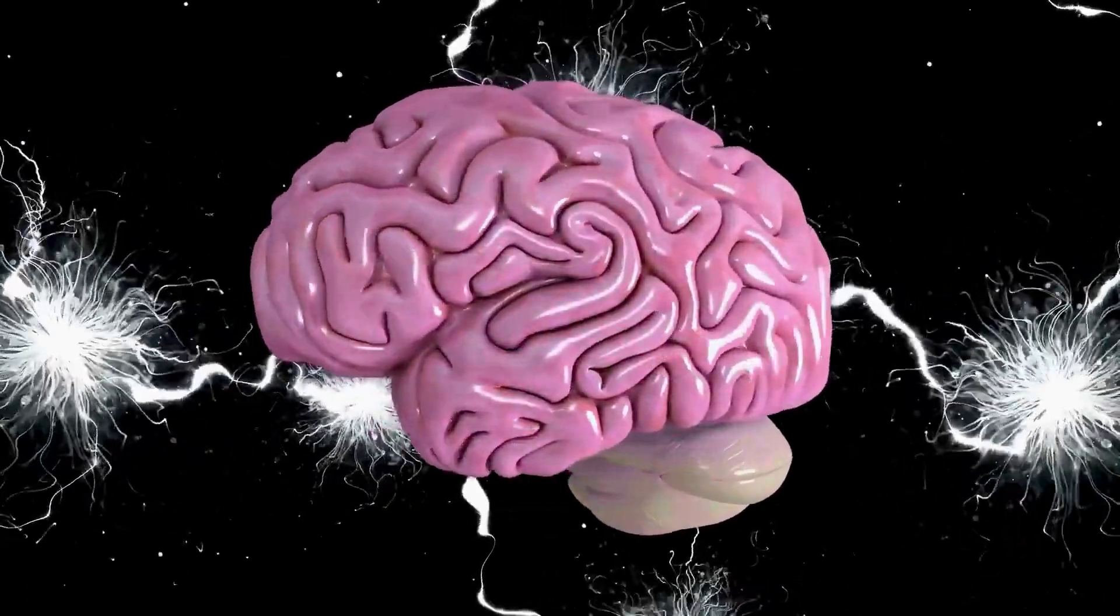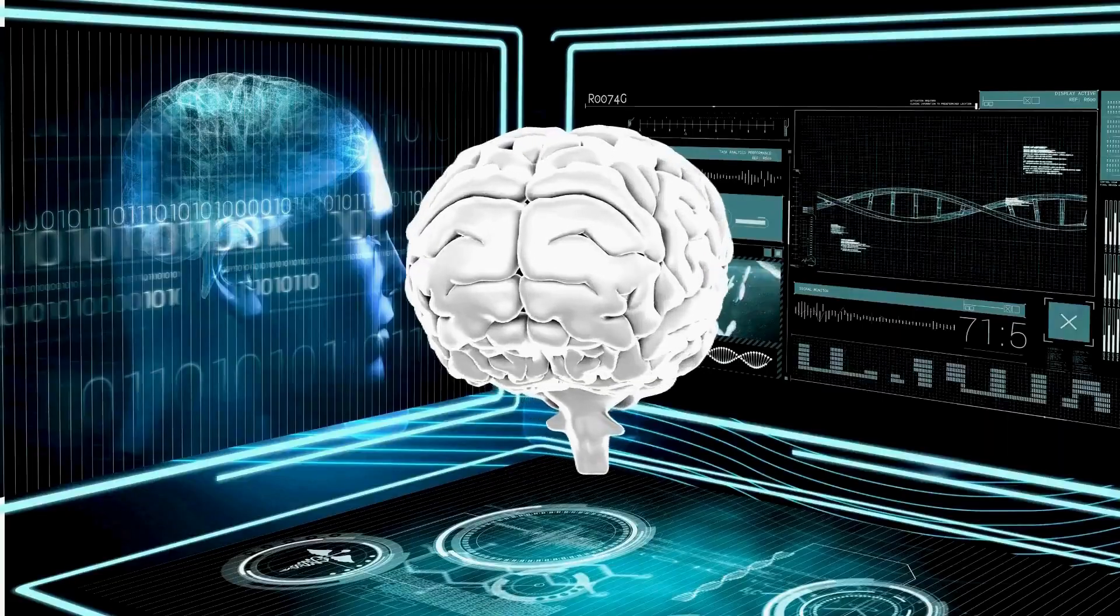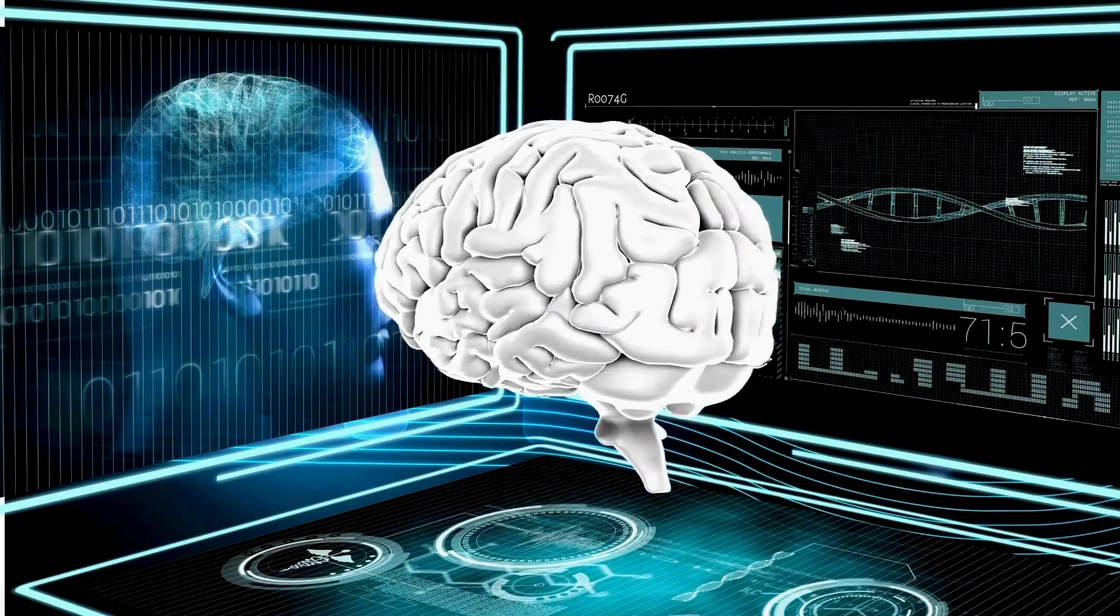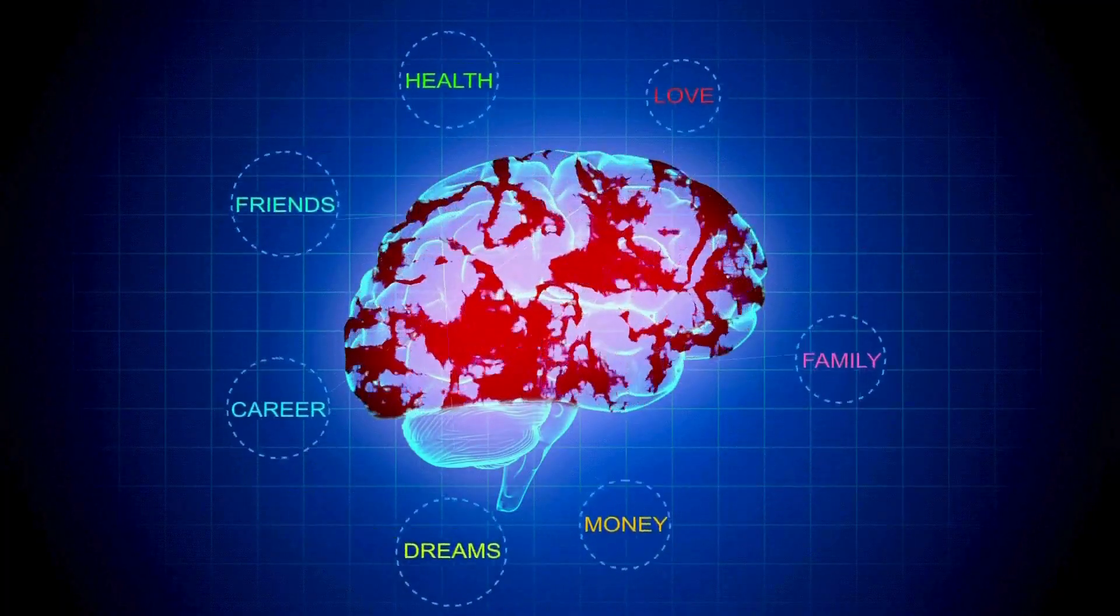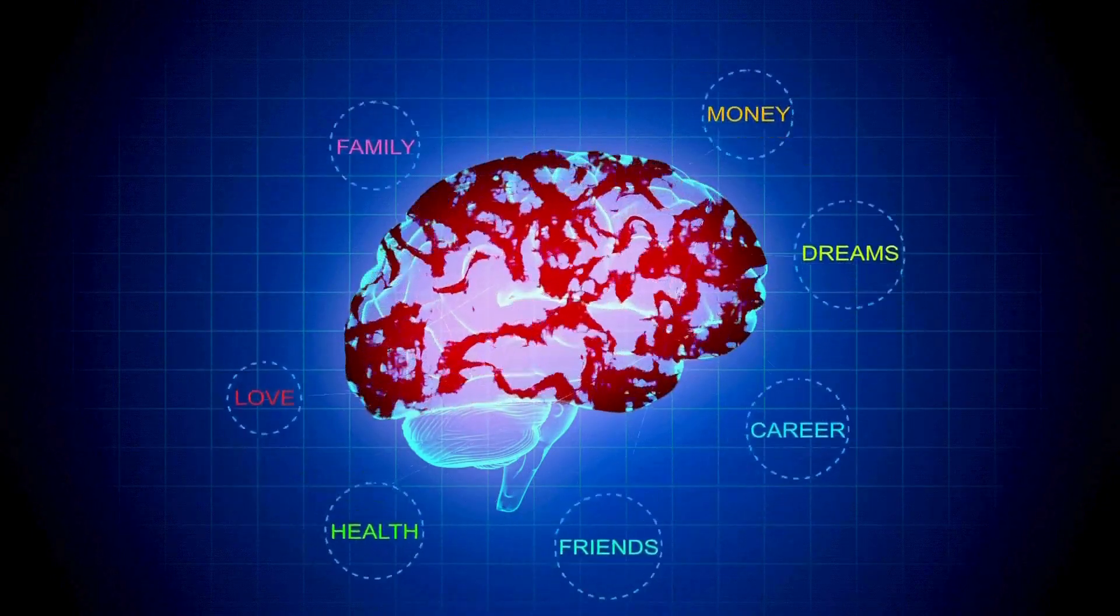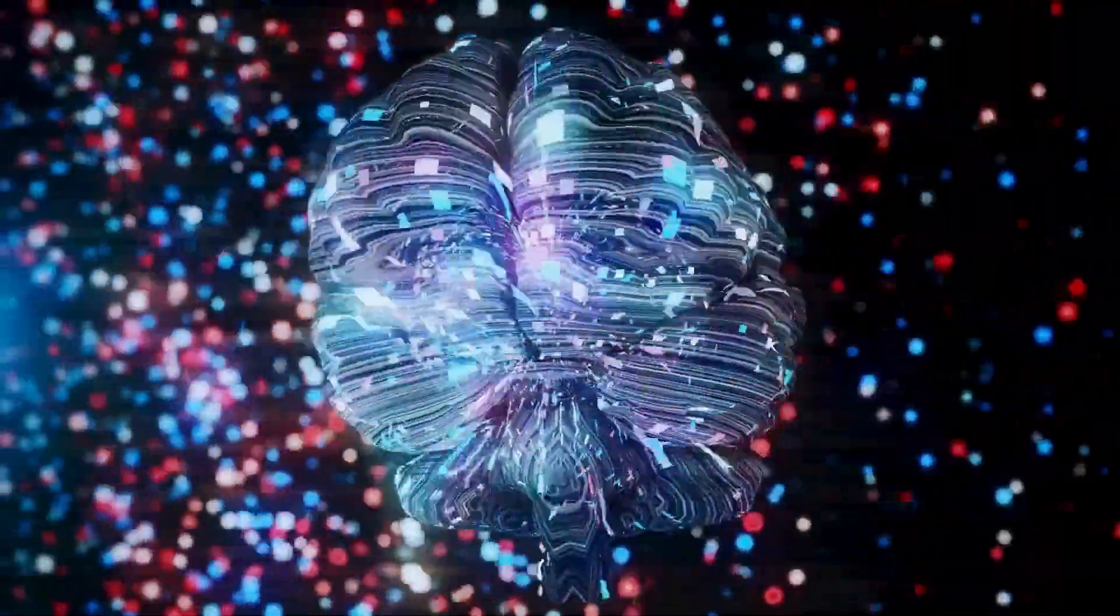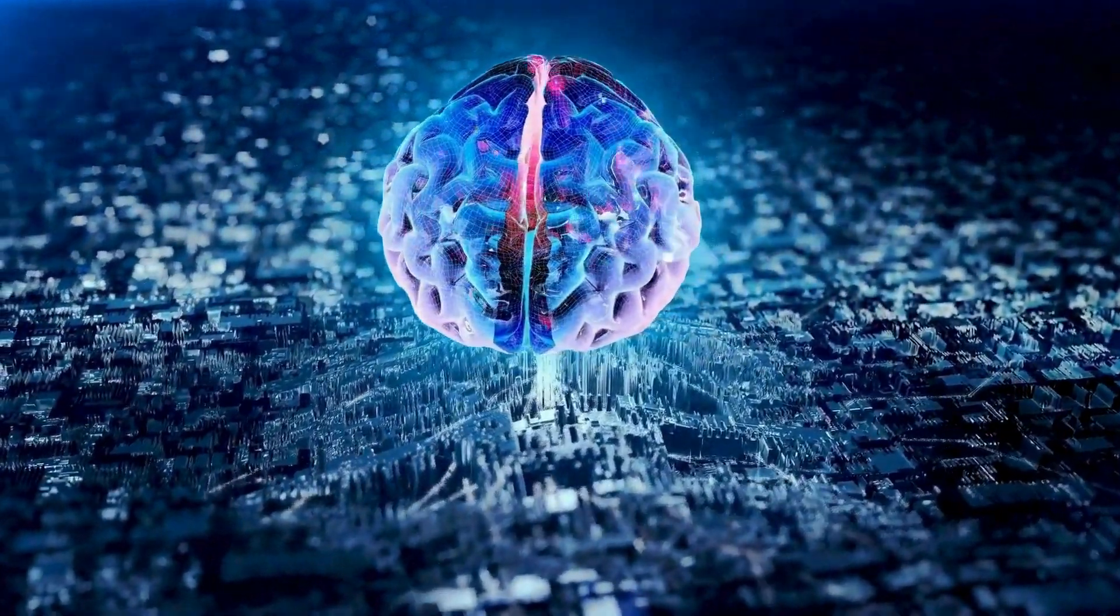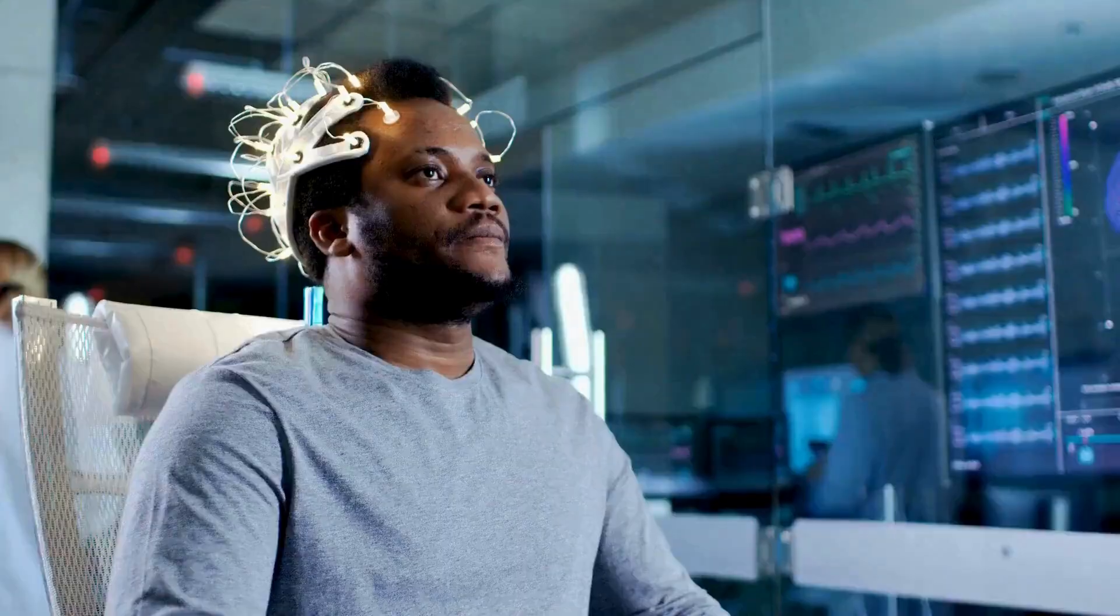For the first time, a brain-reading device has been implanted into a human being. This trial is a daring step forward, aiming to allow individuals with severe paralysis to control devices with nothing but their thoughts. The device itself is a marvel of engineering. It features over a thousand recording sites to pick up on brain activity. It's a bit like having a thousand microphones all listening in on the symphony of your thoughts. But it's not just about listening. The device also needs to translate what it hears into action. This is where Neuralink's advanced brain-computer interface technology comes into play. It's designed to process the complex signals from the brain and transform them into commands that can control a computer or other devices.